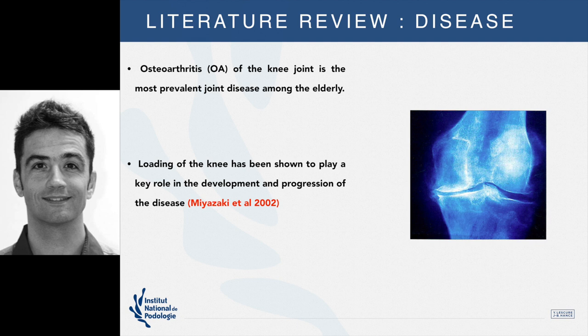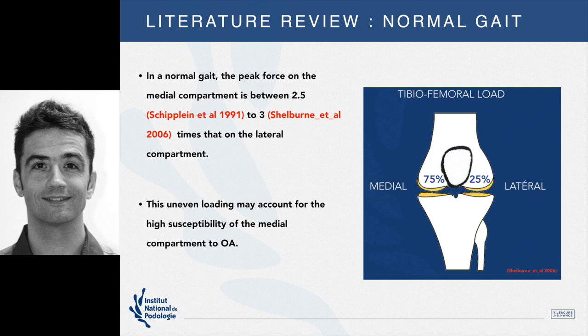Looking at the literature, osteoarthritis is the most prevalent joint disease in the elderly. Even though it's a combination of metabolic and mechanical problems, it seems that the load applied to the joint plays a key role in the development and progression of this disease. In normal gait, there is three times the load on the medial compartment than the lateral, which may explain the high rate of medial compartment pathology and osteoarthritis.